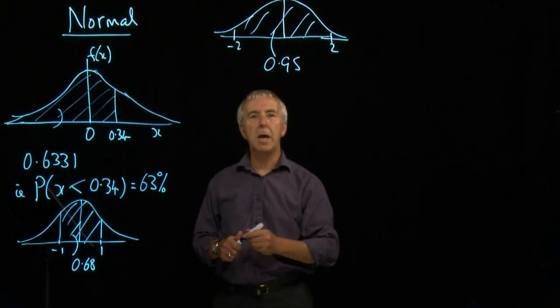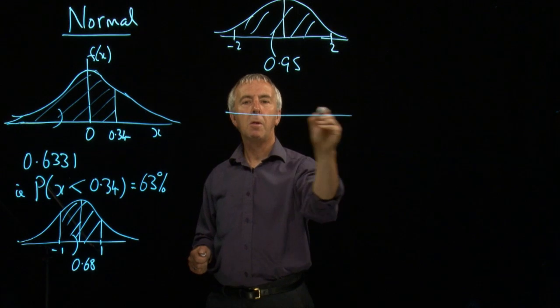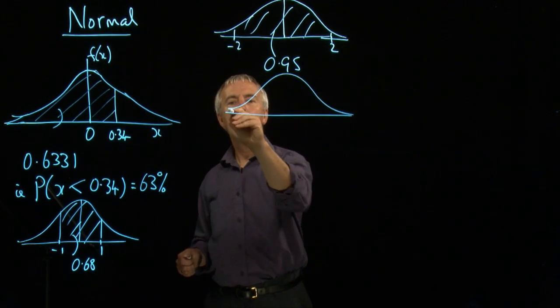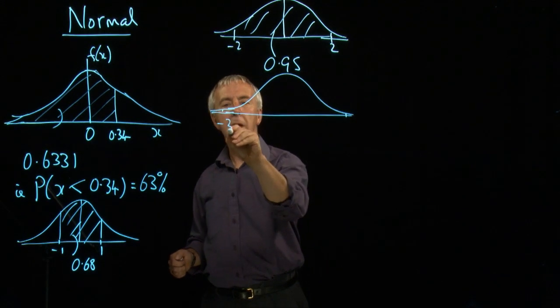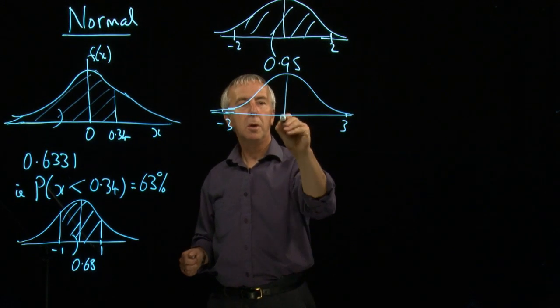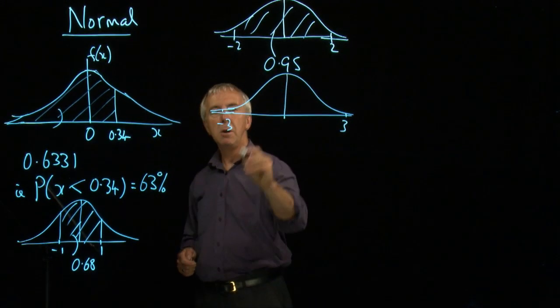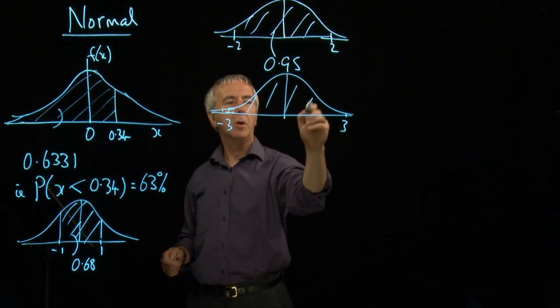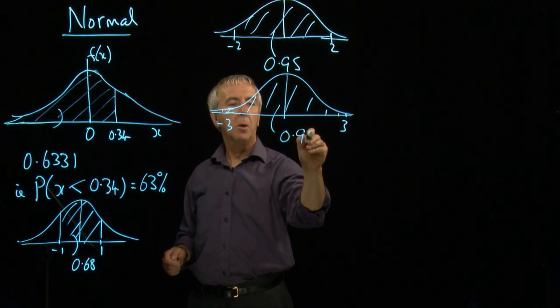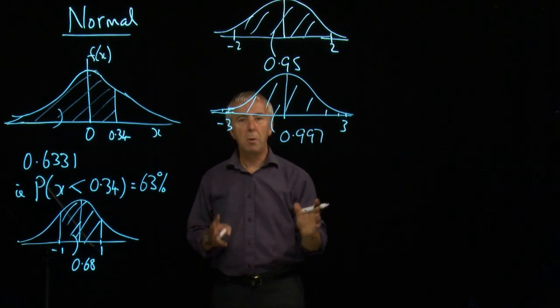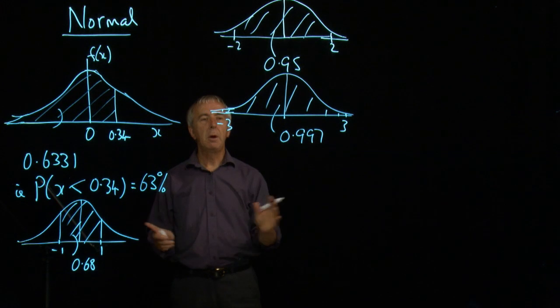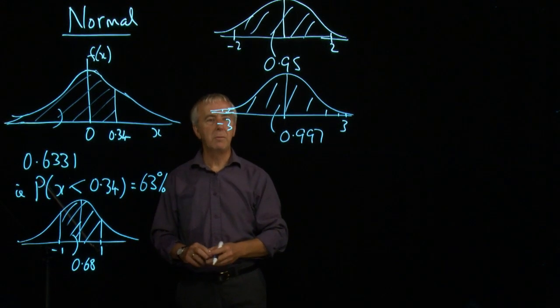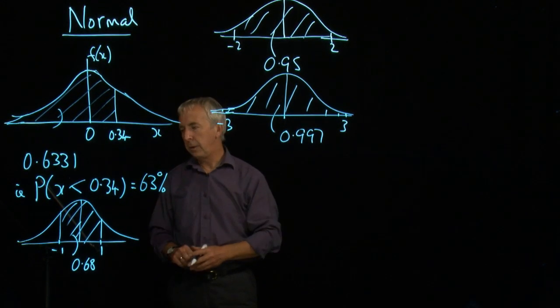And if we go to three standard deviations, there's almost nobody outside because we get 99.7% within plus or minus three standard deviations. So there's hardly anybody outside. In fact, 0.3% of the population are outside.